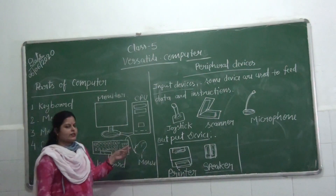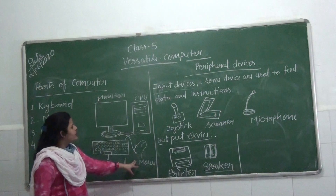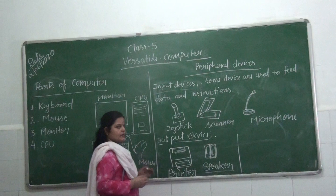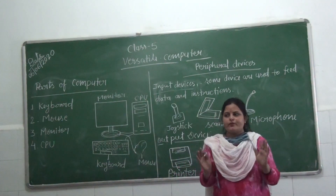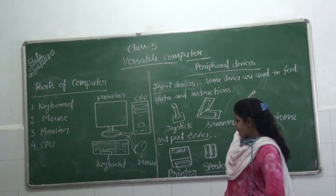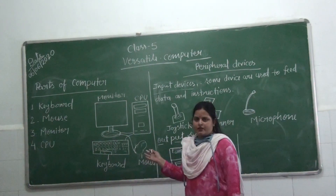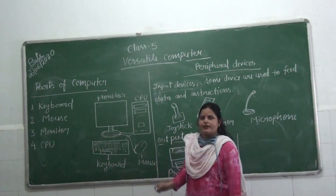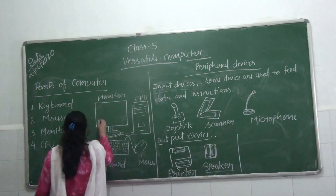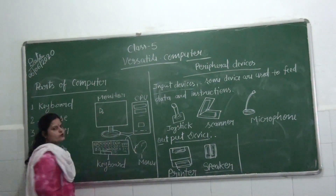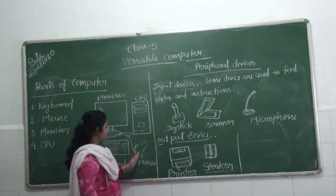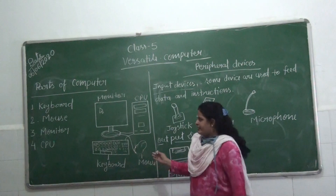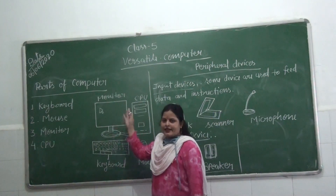Mouse has 2 or 3 buttons on the top. Its work is to draw pictures, select icons and tabs, and clicking. There is single click and double click. The arrow on screen points to the mouse cursor, and the arrow can change to a hand or different types.